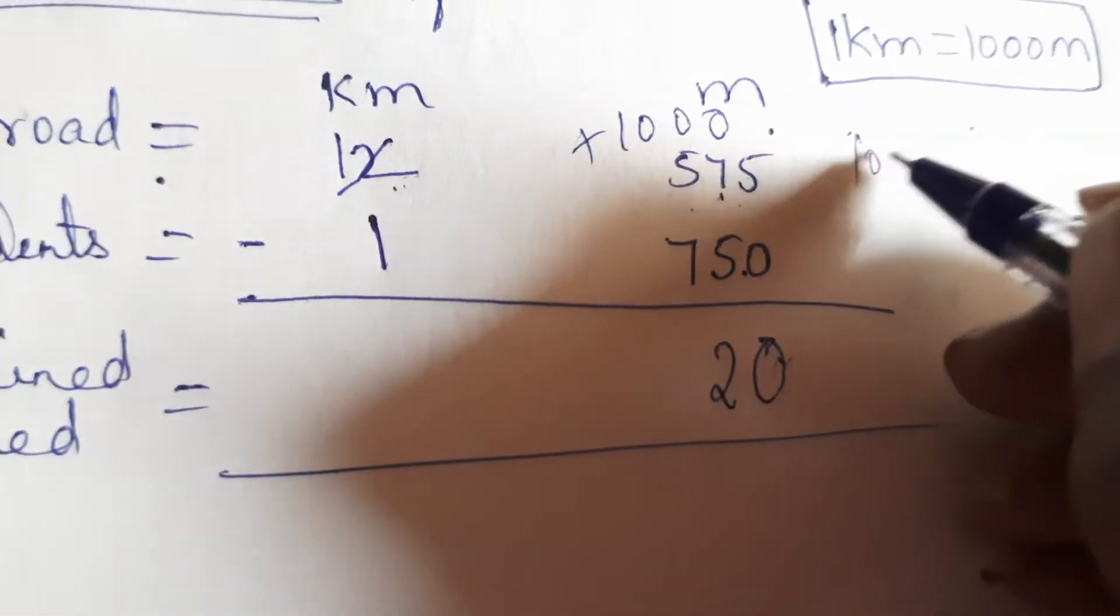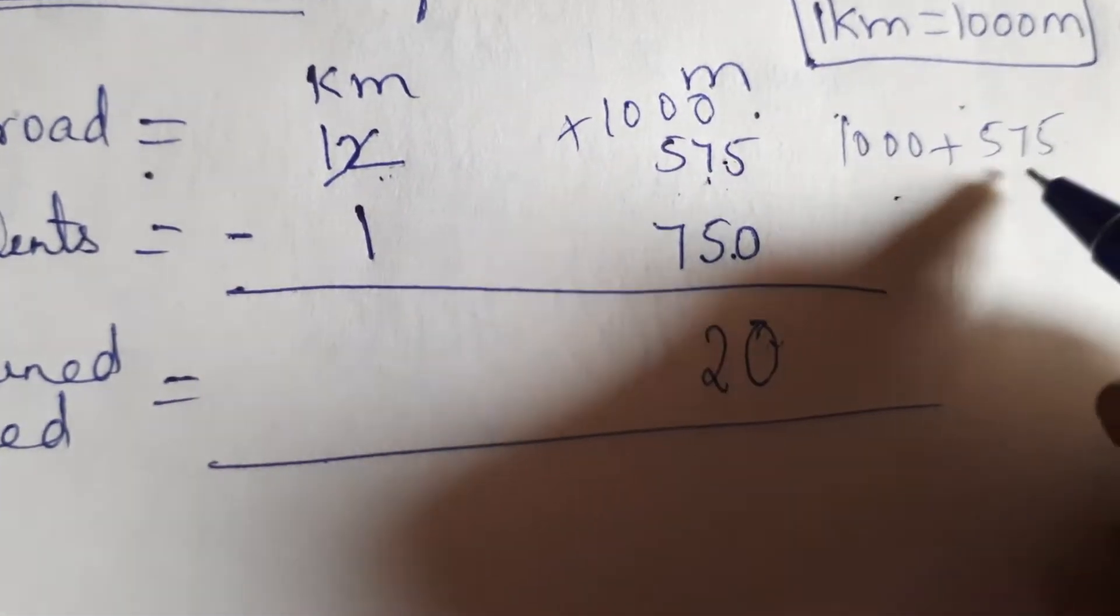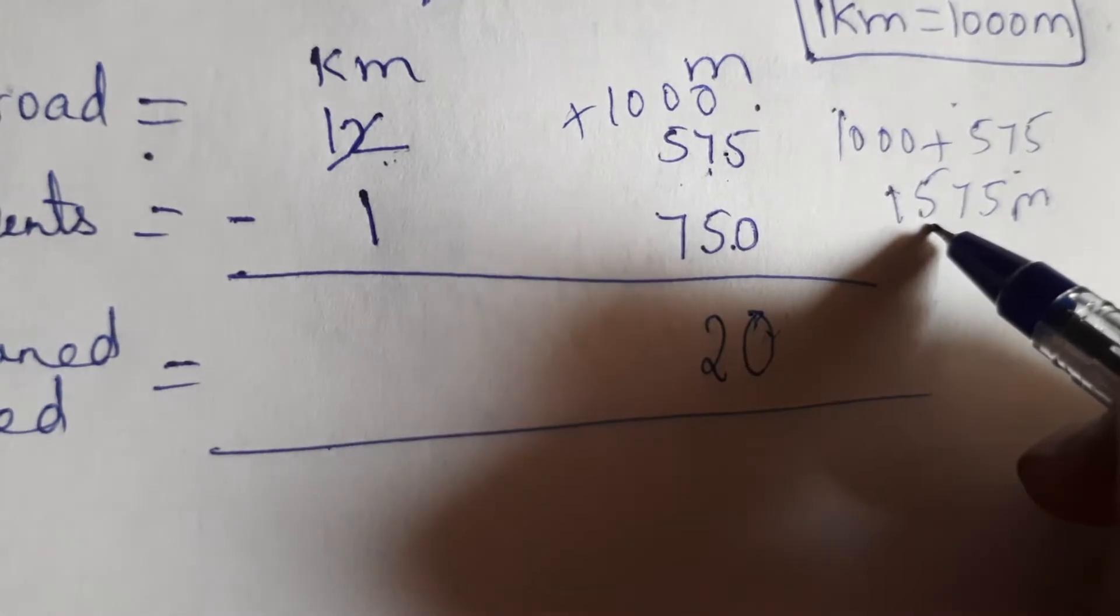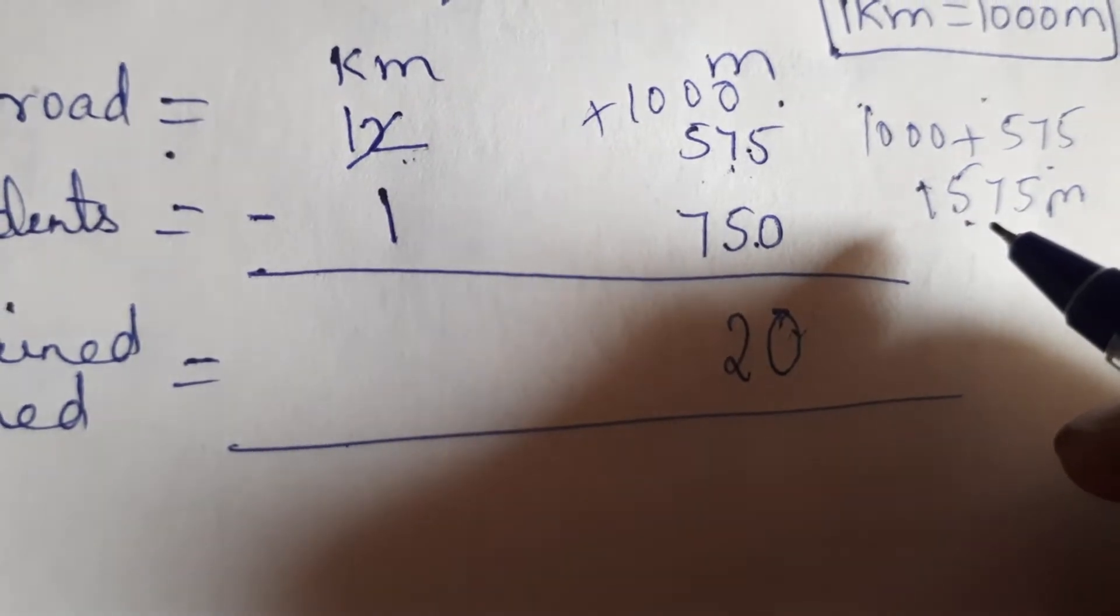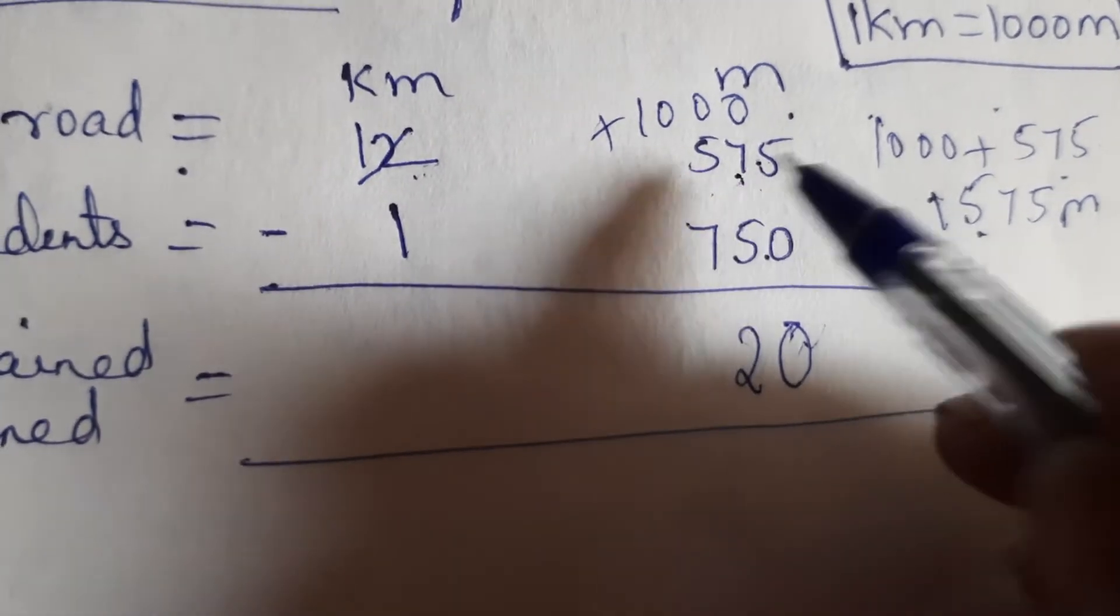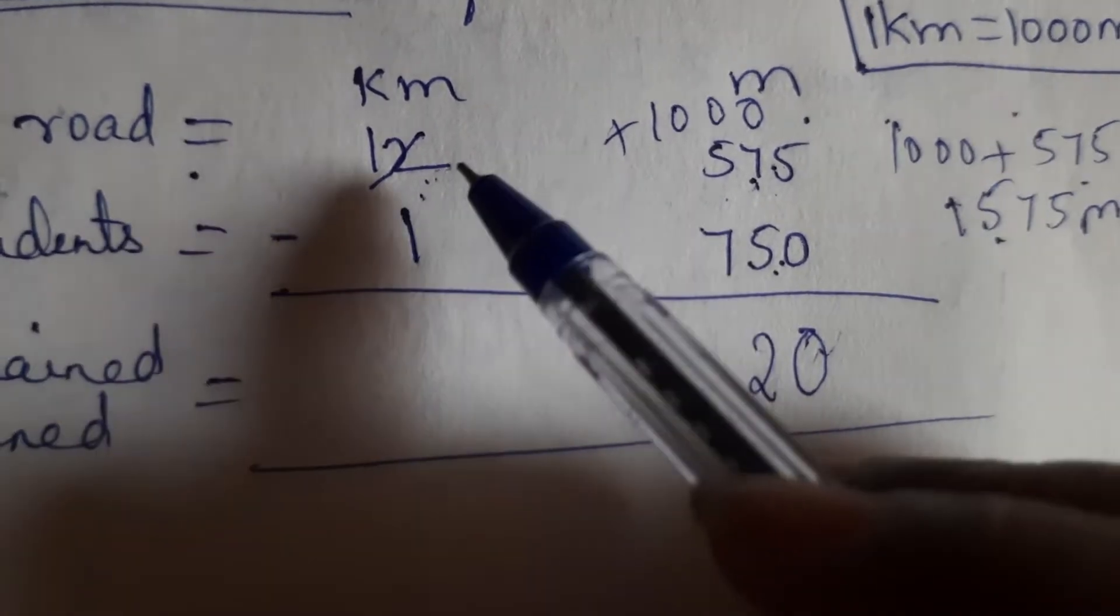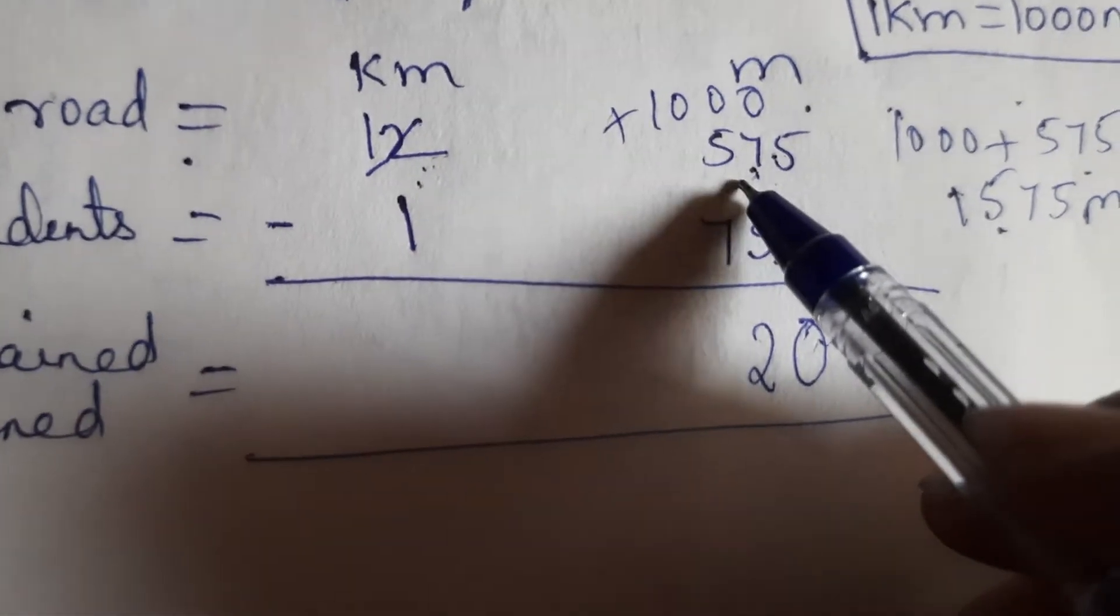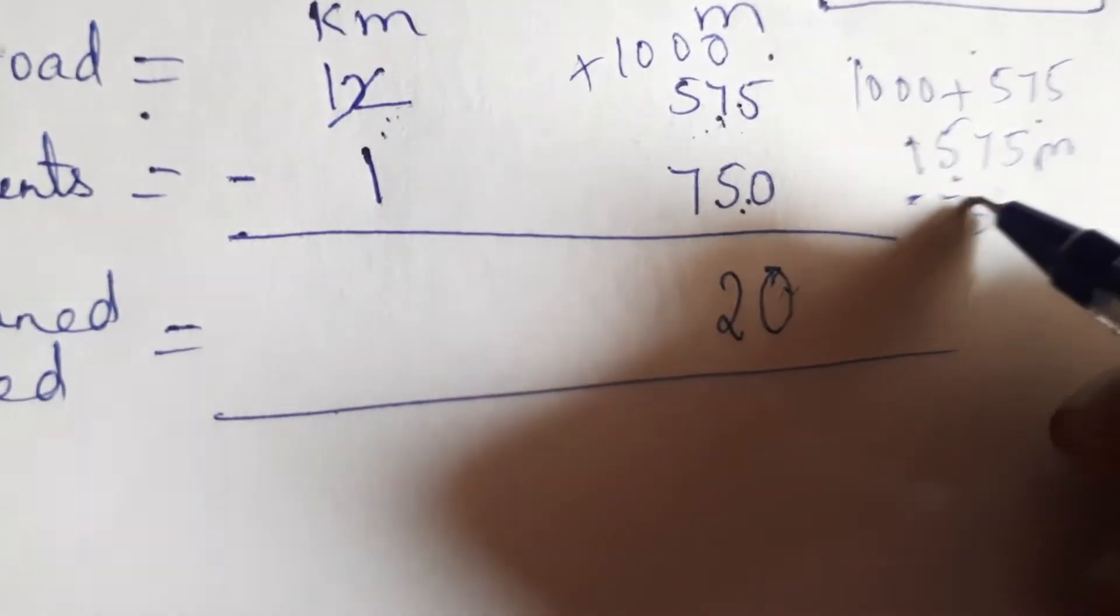So from 2 I am borrowing. So this 2 will become 1 kilometer and 2 has given me 1 kilometer that is nothing but 1000 meter. Okay. So that 1000 meter plus already 575 is there will add that. So 1000 plus 575 is 1575 meter. It is just like for example, you have got 10 chocolates. You are borrowing 4 chocolates from your friends because I want 14 chocolates. So you have added 10 plus 4 is 14.